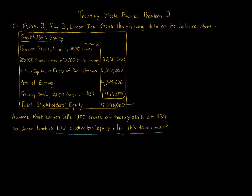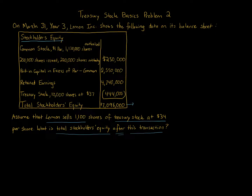We have retained earnings and treasury stock. Remember that treasury stock is a contra stockholders equity account, and it reduces the paid-in capital section because the corporation is buying back its shares of stock. The additional information is that Lemon sells 1,100 shares of treasury stock at $34 per share.